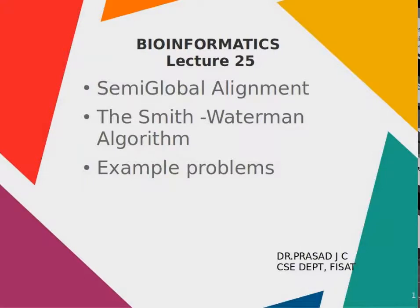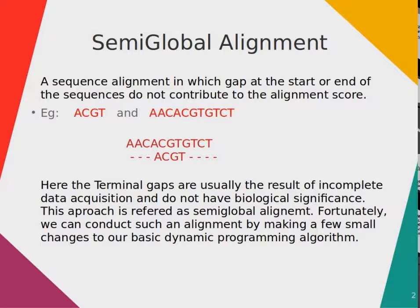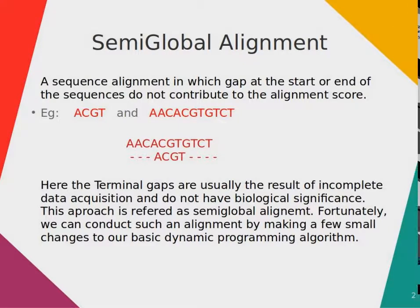The basic alignment algorithm discussed so far performs a global alignment — that is, it compares two sequences in their entirety. The gap penalty is assessed regardless of whether gaps are located internally within a sequence or at the end of one or both sequences. This is not always the most desirable way to align two sequences.